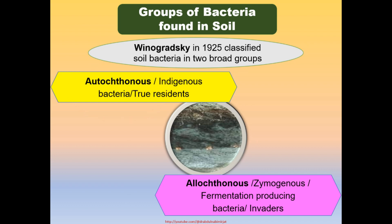Allochthonous bacteria are called homogenous or fermentation-producing bacteria, and are also referred to as invaders. They are less in quantity compared to Autochthonous bacteria. A substrate is needed to perform chemical transformation, and they require an external source of nutrients for energy. Their population and growth increase after the addition of organic material in soil, and with exhaustion of organic nutrients, their growth decreases rapidly.